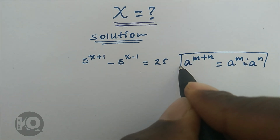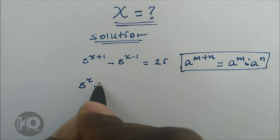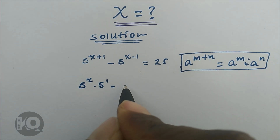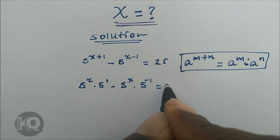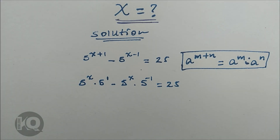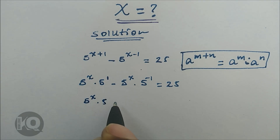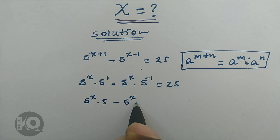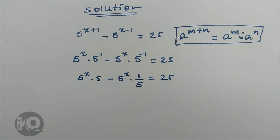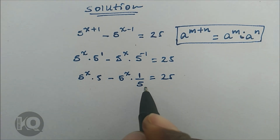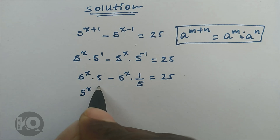Applying this rule to our equation gives: 5 to the power of x times 5 to the power of 1, minus 5 to the power of x times 5 to the power of minus 1, which is equal to 25. This becomes 5 to the power of x times 5, minus 5 to the power of x times 1 over 5, equals 25. We can see the common term 5 to the power of x, so we factor it out.